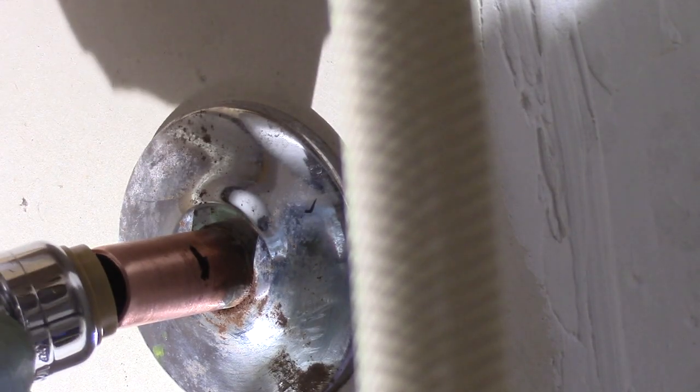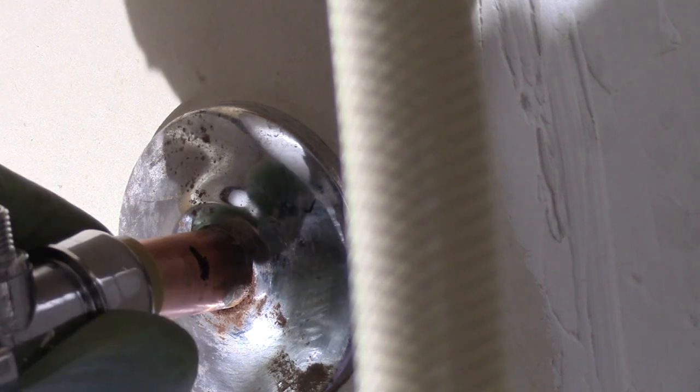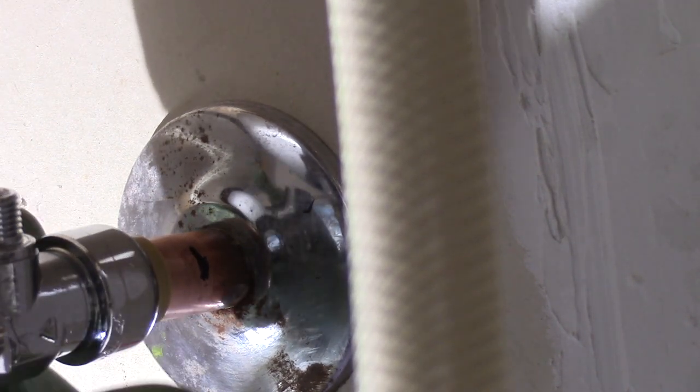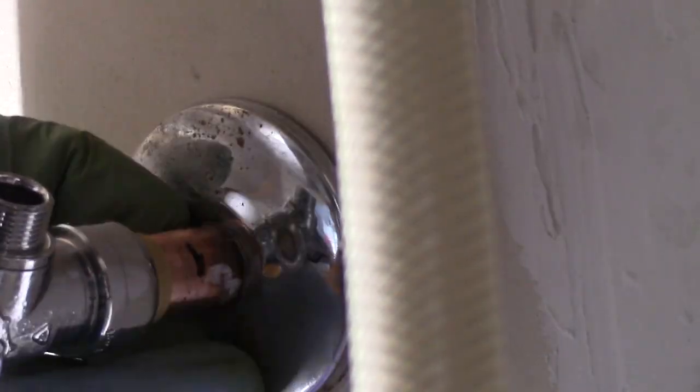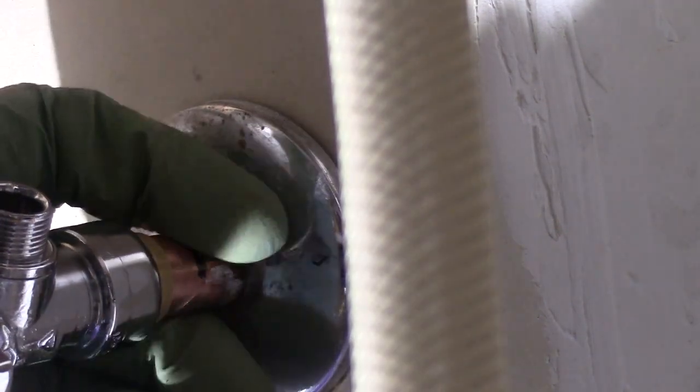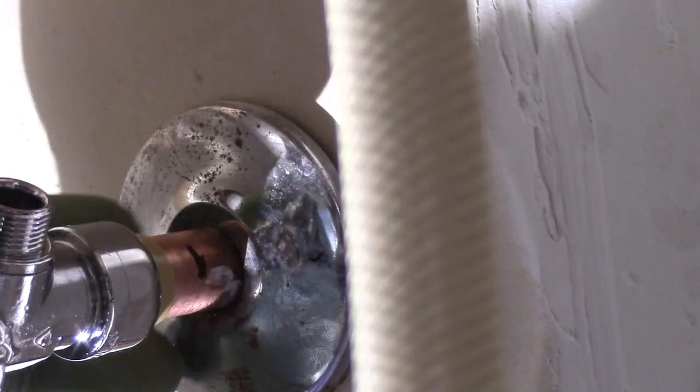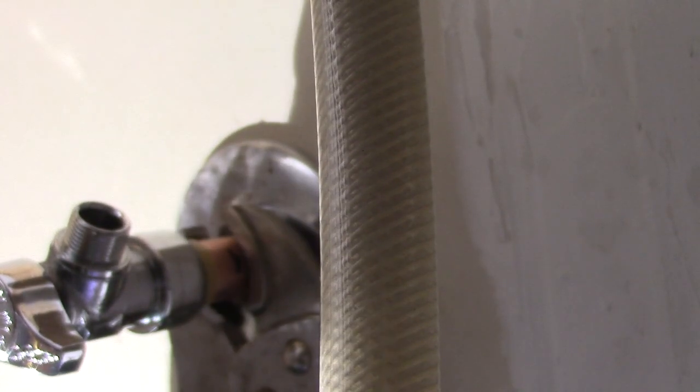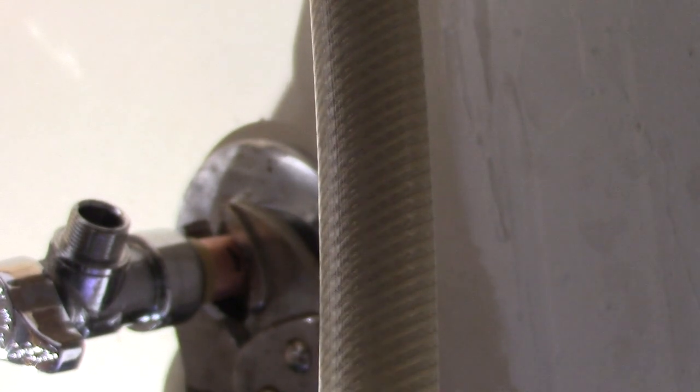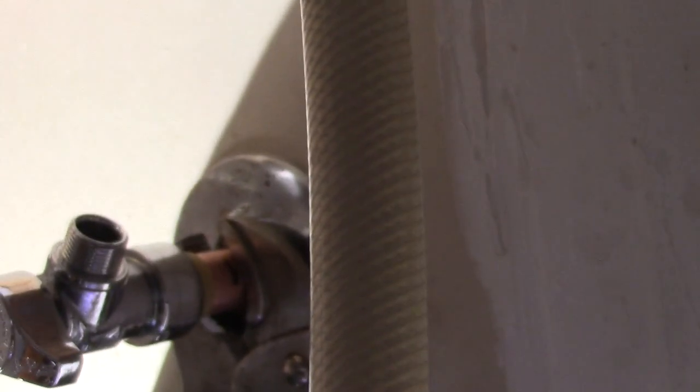Notice when we install the SharkBite into the pipe, the pipe springs back and forth. This means the original plumber did not properly fasten this pipe to the stud behind the drywall. We have to carefully use locking pliers to hold the pipe in place, making sure you don't dent or crack your copper pipe.